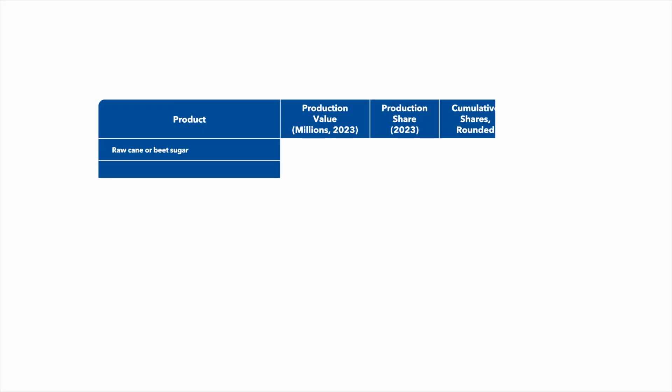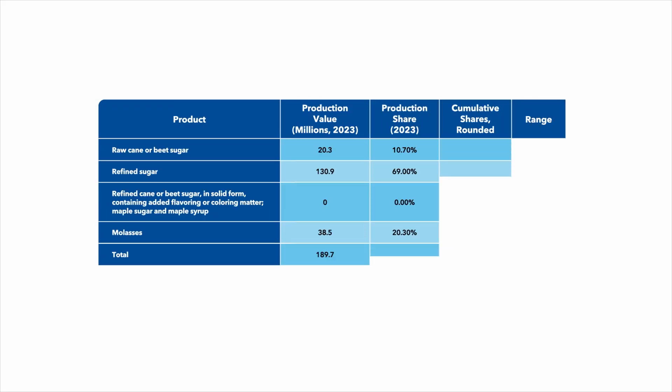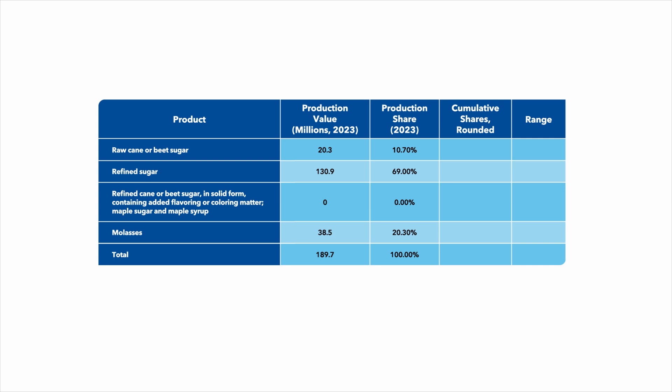Let's see how we can use probability proportionate to size, or PPS, techniques to identify the items that will be priced. A sugar manufacturing establishment reports the production values and shares as shown here.